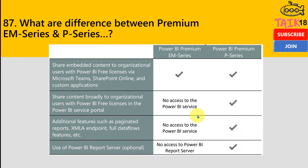What is the difference between Power BI premium EM series and P series? Basically, if you look at this chart, sharing embedded content to organizational users with Power BI free license via Microsoft Teams, SharePoint Online, and custom applications is possible in both of them. However, sharing content broadly to organizational users with Power BI free license in the Power BI service portal is not possible with EM series, because embedded is only possible to embed in your application — you don't have access to the Power BI portal for this.